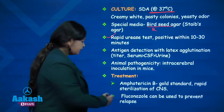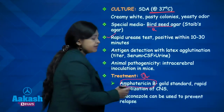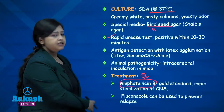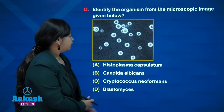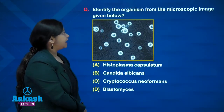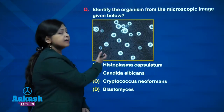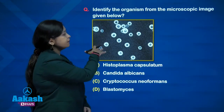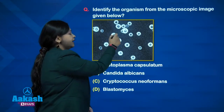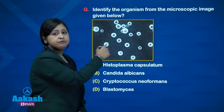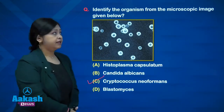Coming to treatment: amphotericin B is the drug of choice and the gold standard for rapid sterilization of the CNS in cases of CNS cryptococcosis. Fluconazole can also be used. For the image-based question — identify the organism from the microscopic image — you can clearly see an India ink preparation where the background is stained black, the yeast cells are unstained, and there are large halos indicating the capsule. Hence the answer is Cryptococcus neoformans.